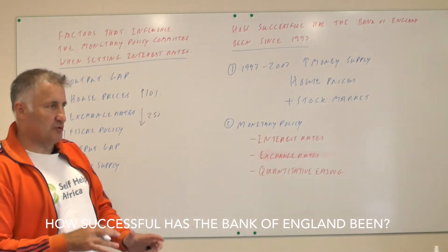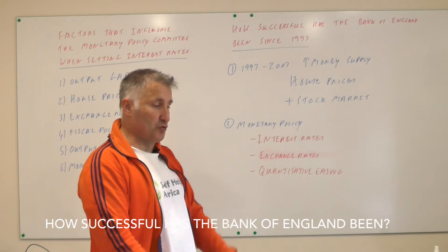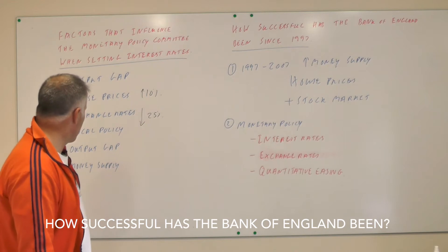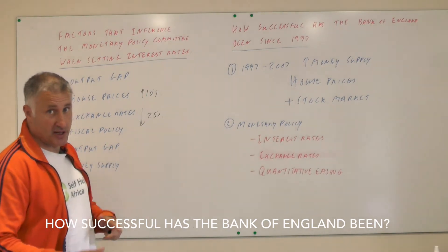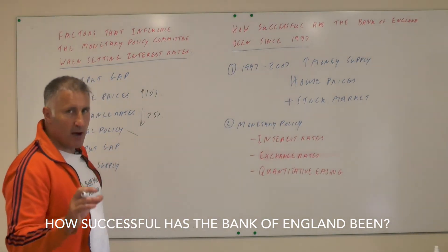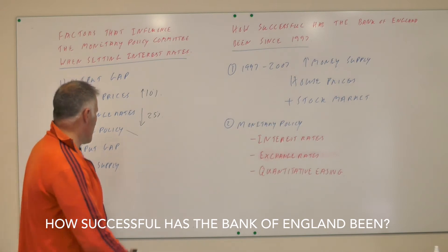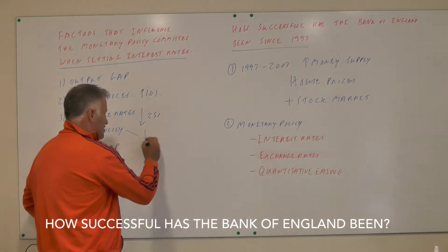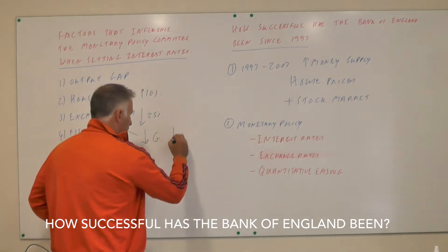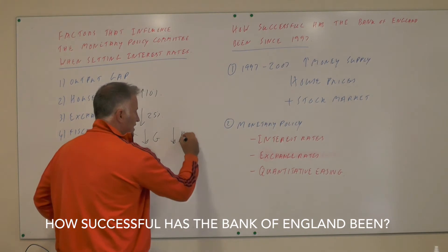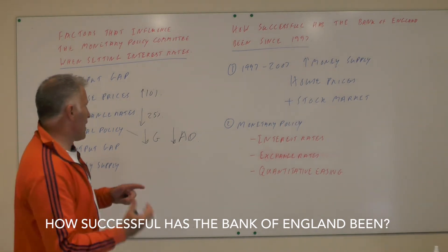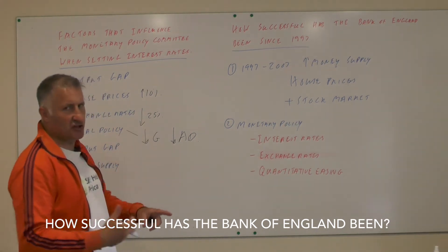There's a big argument here: we want a low exchange rate to sell more exports, but a low exchange rate means higher cost push inflation. The MPC also looks at fiscal policy. This is a rare time in UK economic policy where fiscal and monetary policy are working together. The government is decreasing G, and via the multiplier-accelerator effect, that leads to a fall in aggregate demand, creating a negative output gap — meaning interest rates can then be lower.